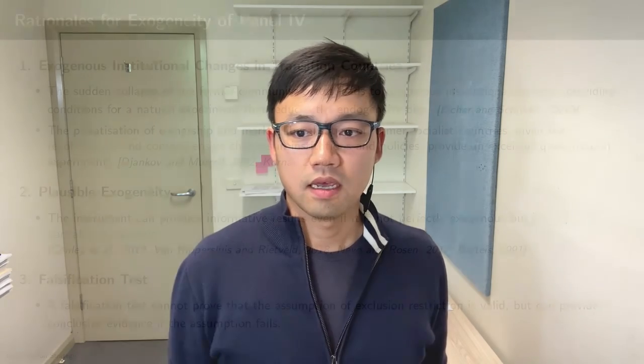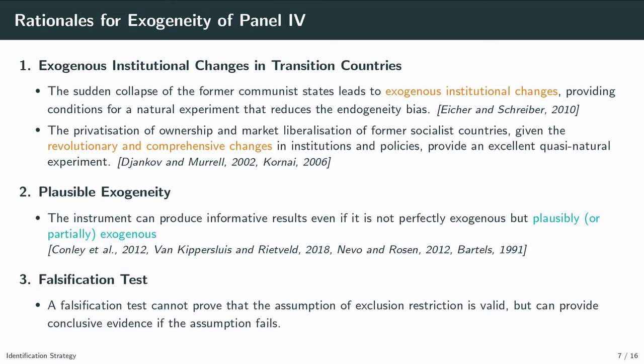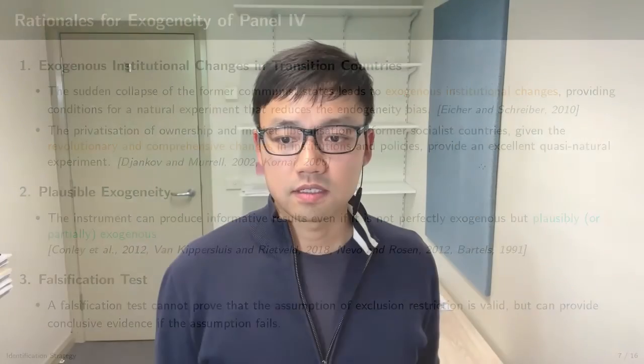As you know, the exogeneity of instruments cannot be tested statistically, so we need to appeal to history, theory, and some post-estimation tests. Here are some rationales for the exogeneity of using panel IV. First, I assume the radical changes of transition countries in the 1990s were exogenous. After the collapse of the communist regime in the early 1990s, they experienced sudden, widespread, and exogenous structural changes in institutions and economic structure. So these features are used to control endogeneity problems.